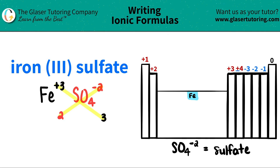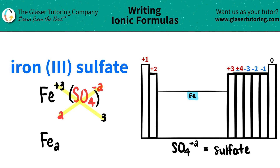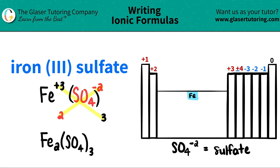Now we're ready to write the formula. I have Fe — iron — and the crisscross told me I need 2 of them, so I put a 2 here. Since I have multiple polyatomics — in this case 3 SO4s — I need parentheses around the polyatomic. So I write the opening parenthesis, write the whole polyatomic SO4, close the parenthesis, and then write how many I have: 3. And that's how you write the formula. Iron 3 sulfate is Fe2(SO4)3.